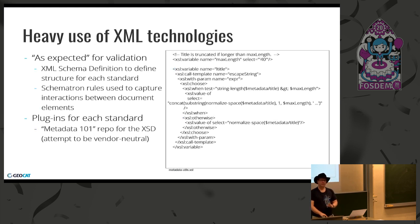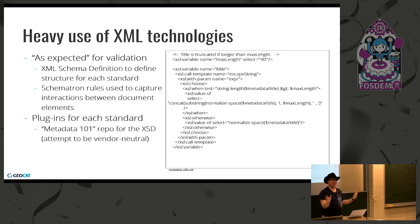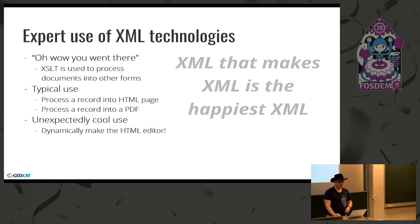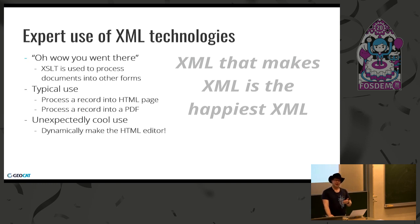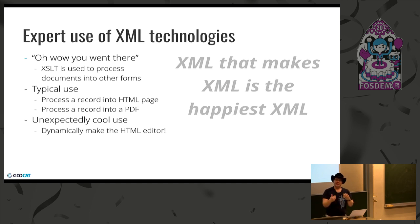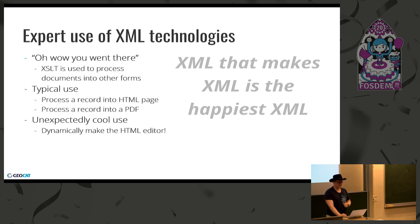GeoNetwork really loves its XML technologies. I expected validation — that's fine. They also use Schematron to put some rules in play, and they've got a plugin for each standard stored in a separate repository to be technology neutral. One thing that was impressive: they actually use XSLT to generate that editor on the fly from the schema document. That's one reason why people are able to adapt this for their own national standard. Typically I see XSLT used to generate HTML or PDFs, but dynamically making an editor on the fly is a new one for me.